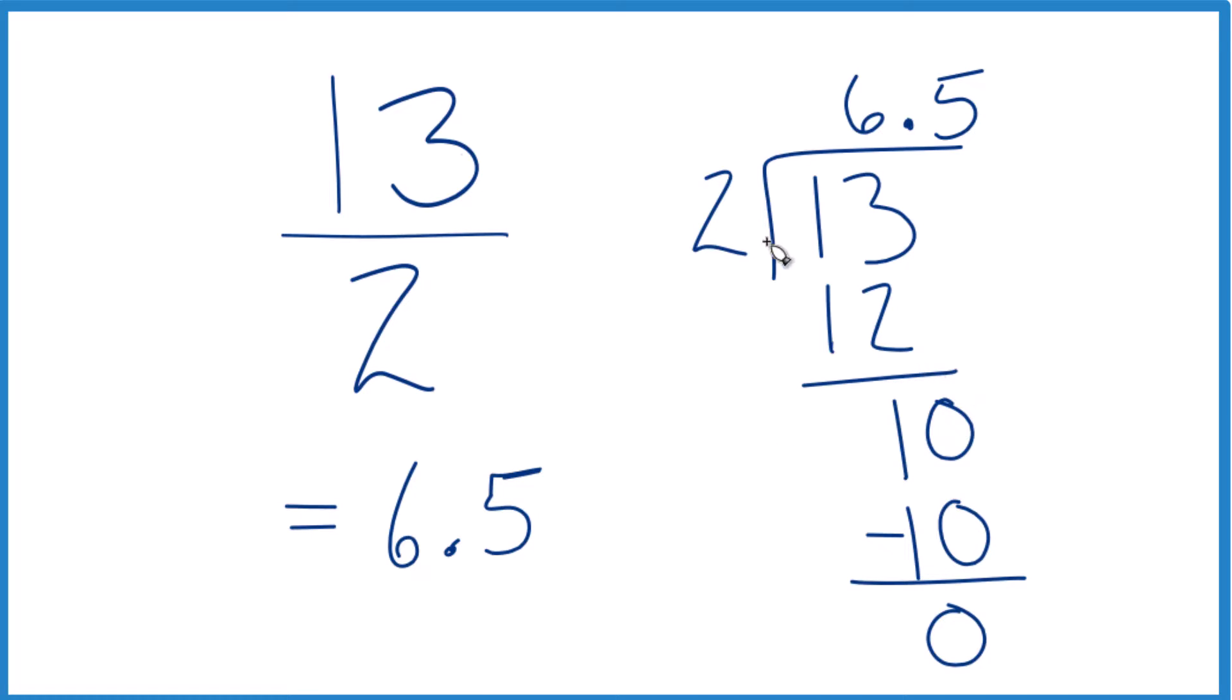This is Dr. B, figuring out what 13 over 2 is as a decimal. The answer, 6.5. Thanks for watching.